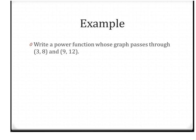Here are our two points. We're asked to write a power function y = ax^b that goes through these two points. Setting up the system: 8 = a·3^b and 12 = a·9^b. We're still going to solve by substitution, but now because you're solving for an exponent, you'll probably need to use logarithms.